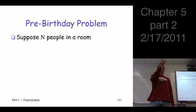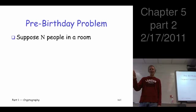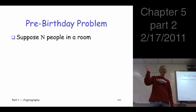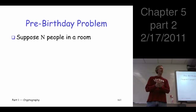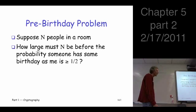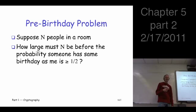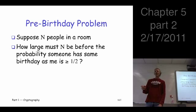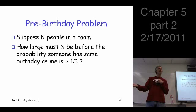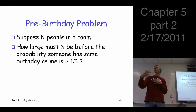Suppose you have n people in a room. The question is: how large does n have to be before the probability that somebody has exactly the same birthday as me is at least one half? That word 'expect' just means the probability is at least one half.